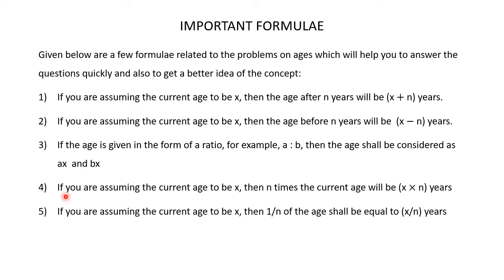If you are assuming the current age to be x, then n times the current age will be x multiplied by n years. Supposing you are assuming the current age to be 20 years, then 2 times the current age will be 40 years, which is nothing but 20 multiplied by 2 years.